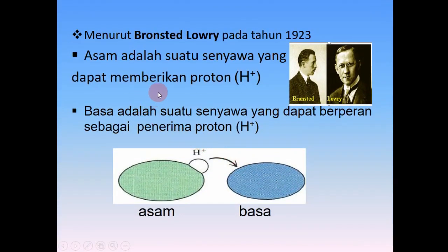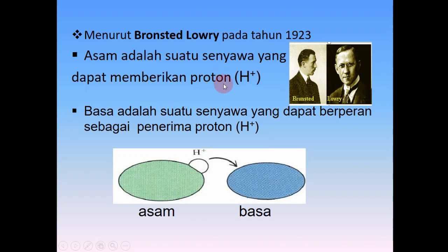Kemudian menurut Brønsted-Lowry tahun 1923 — dua ilmuwan yang menjadi satu — menurut mereka, asam adalah suatu senyawa yang dapat memberikan proton atau H+, karena memberikan proton maka diberi nama donor proton. Sedangkan basa adalah senyawa yang dapat berperan sebagai penerima proton, atau akseptor proton, simbolnya H+.